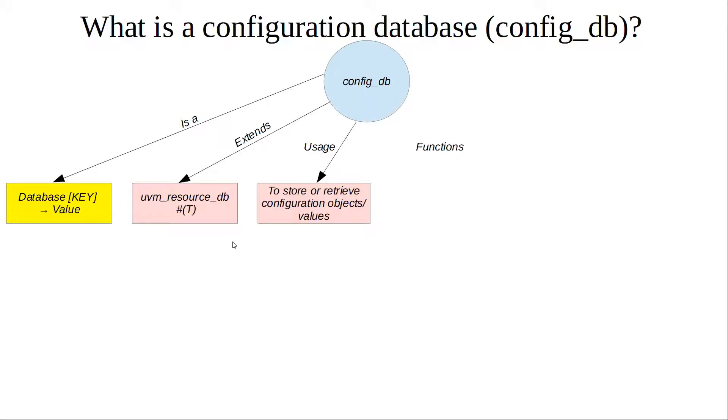The main functions are set and get. The set function is used for storing, and the get function is used for retrieving. Set is type void; it doesn't return anything because it just updates or stores a value. Get returns a bit: one if successful, zero if unsuccessful.